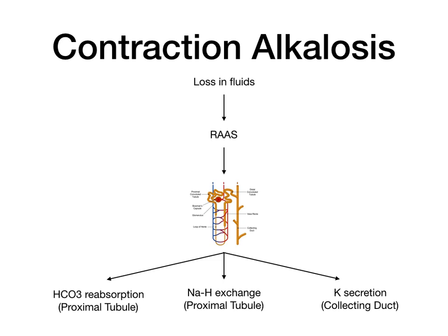In the proximal tubule, you're going to get bicarb reabsorption, and you're also going to get an increased exchange of sodium and hydrogen. Then in the collecting duct, you're going to get an increased secretion of potassium. So in contraction alkalosis, there's a loss of fluids, and downstream the nephron has different changes as a direct result of the activation of the renin-angiotensin-aldosterone system.